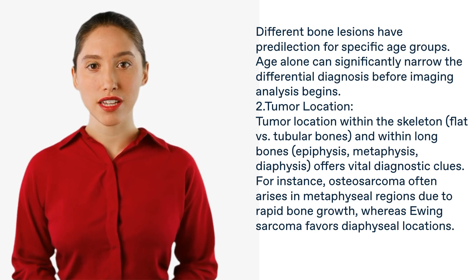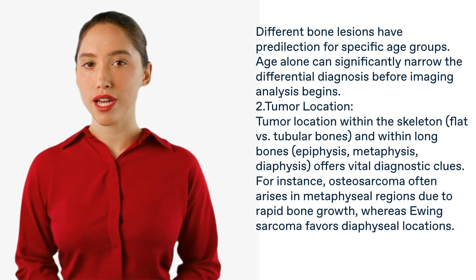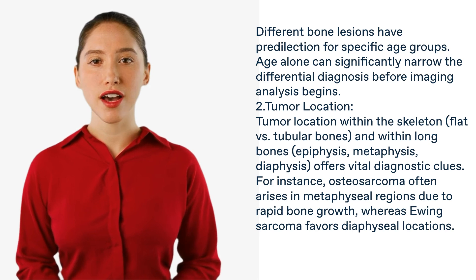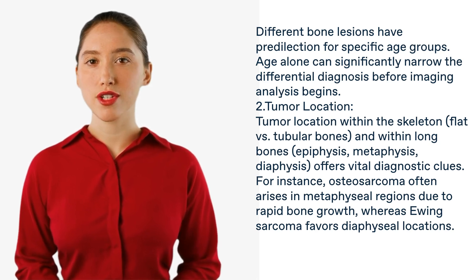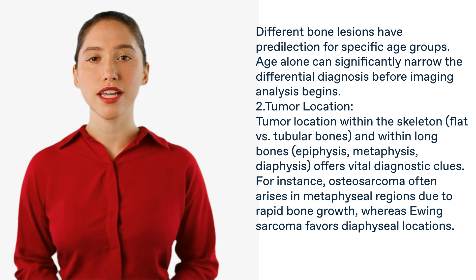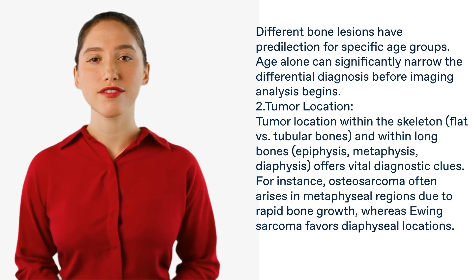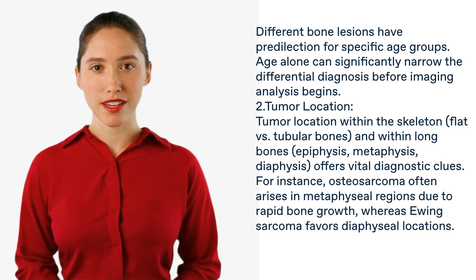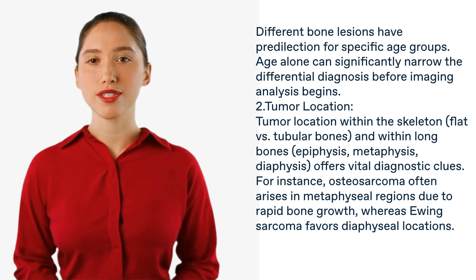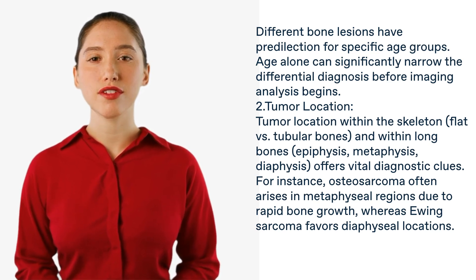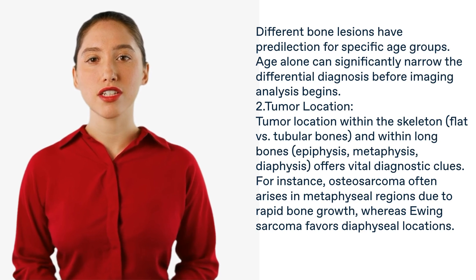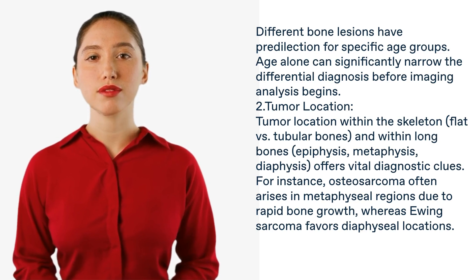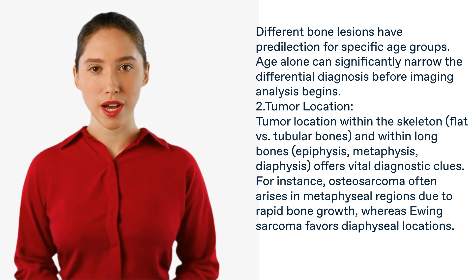Tumor location within the skeleton — flat versus tubular bones — and within long bones, epiphysis, metaphysis, and diaphysis, offers vital diagnostic clues. For instance, osteosarcoma often arises in metaphyseal regions due to rapid bone growth, whereas Ewing sarcoma favors diaphyseal locations.